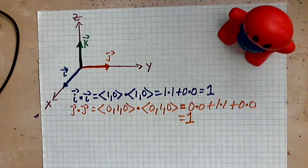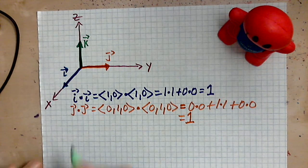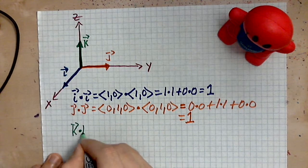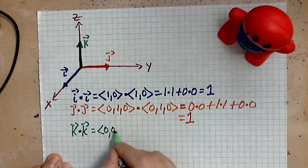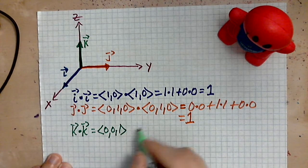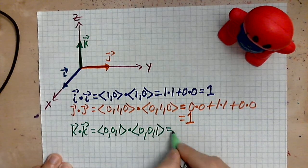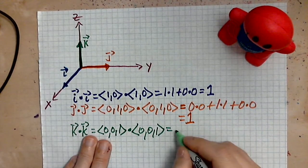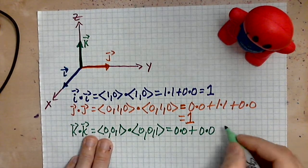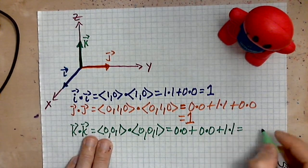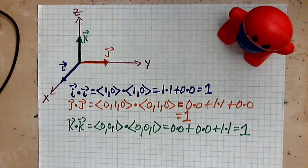And now let's take a look at the K. K dotted with K is the following: 0, 0, 1 dotted with 0, 0, 1. Apply the definition. 0 times 0 is that. Then plus another 0 times another 0. Plus another 1 times 1. Which is just 1. So this is another 1.